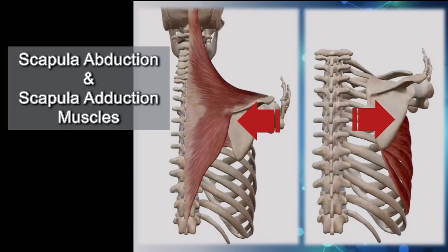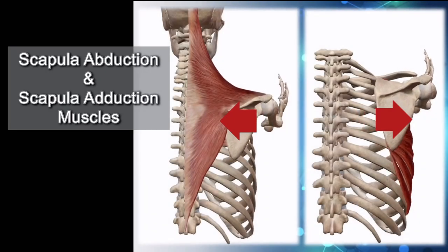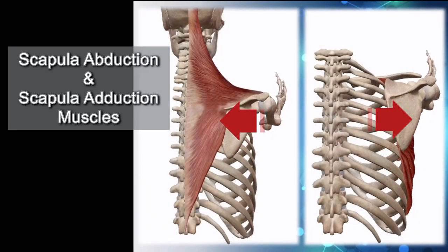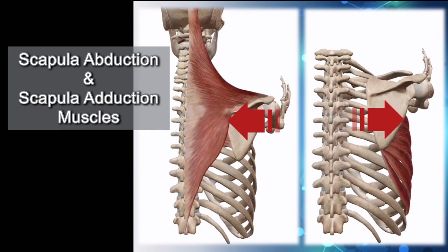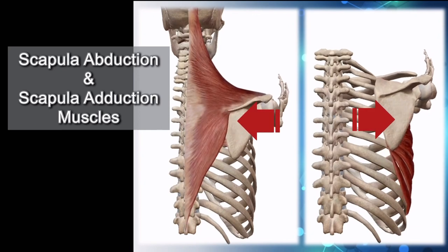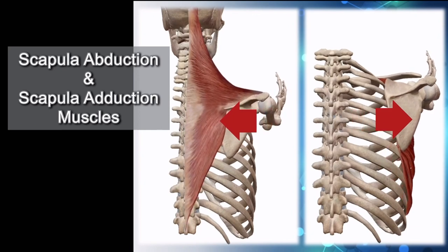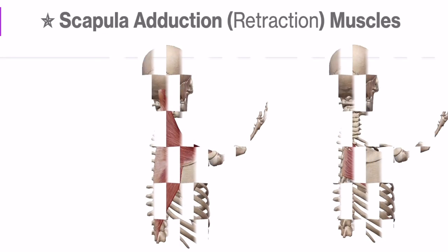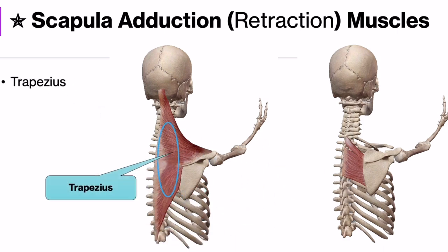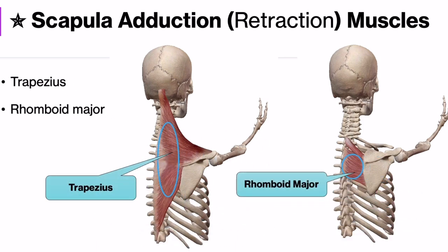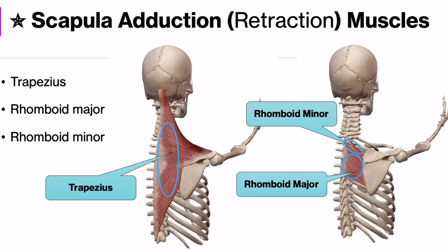Scapula abduction and adduction muscles — in other words, scapula protraction and retraction muscles. There are three main muscles for scapula adduction: trapezius, rhomboid major, and rhomboid minor muscles.